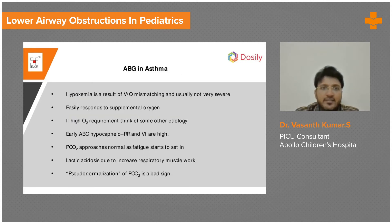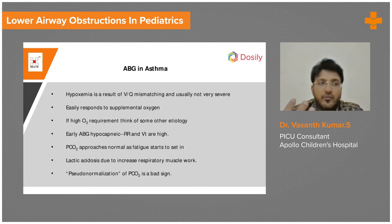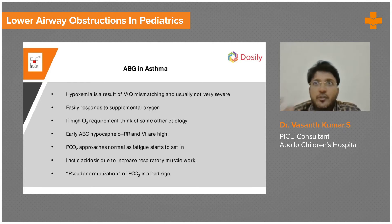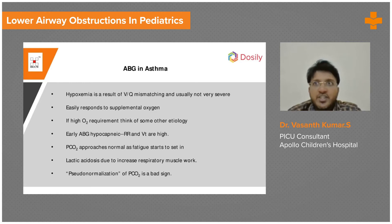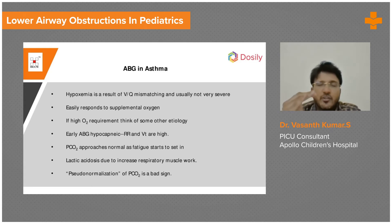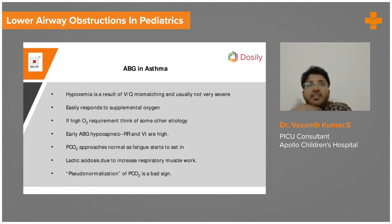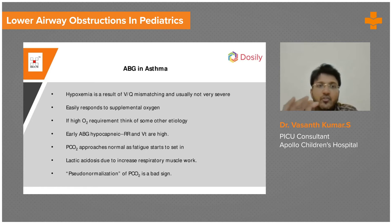In asthma, the first response is tachypnea, which washes out CO2, so an early ABG will show low CO2. But over time, as tachypnea continues, the patient becomes tired and respiratory rate comes down, so CO2 starts to appear normal. That normalization of CO2 is actually fatigue — this is called pseudo-normalization of PCO2, which is a very bad sign.